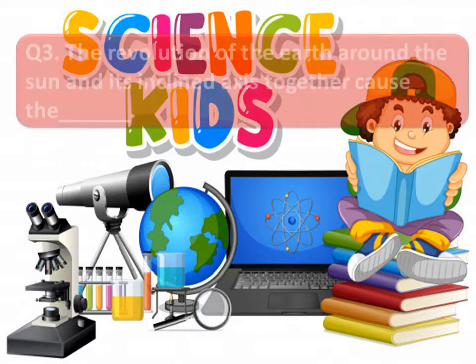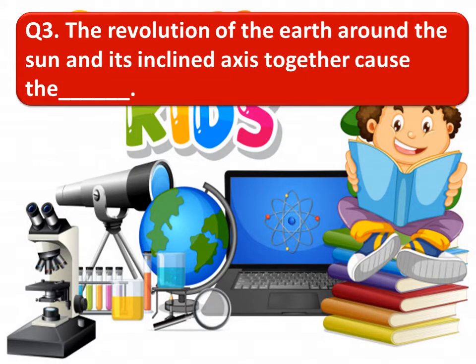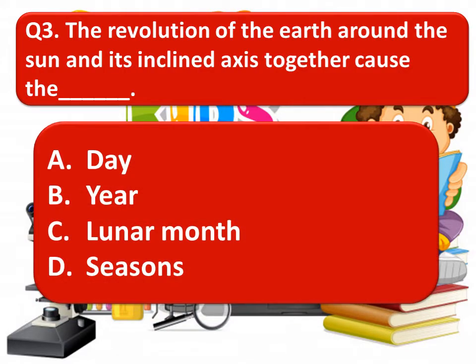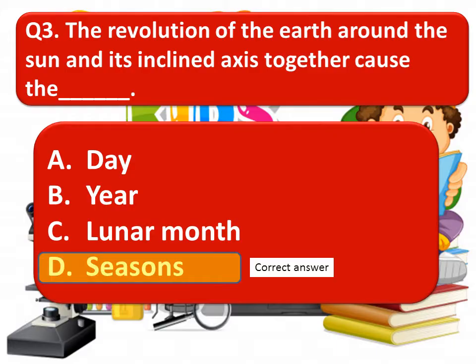The next question is: the revolution of the earth around the sun and its inclined axis together cause the blank. The options are: day, year, lunar month, or seasons. The correct answer is seasons.